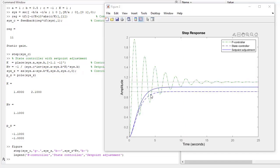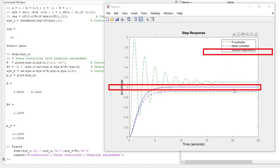And we can see here, this was the controlled system with the P controller. Then, with the state controller, we still have error. And with setpoint adjustments, the error is minimized, but this without disturbance.